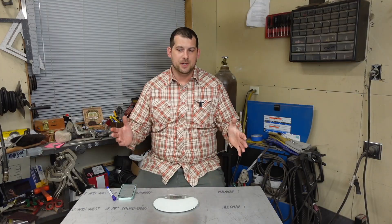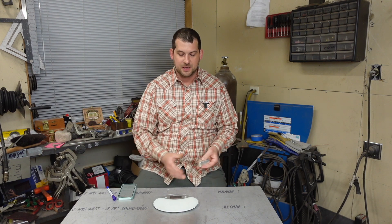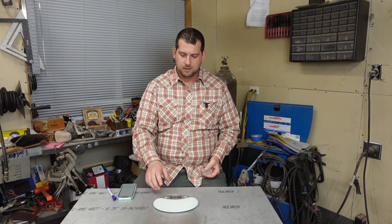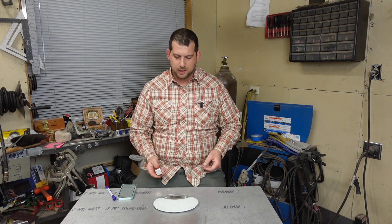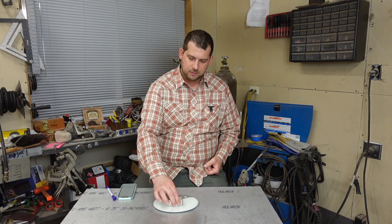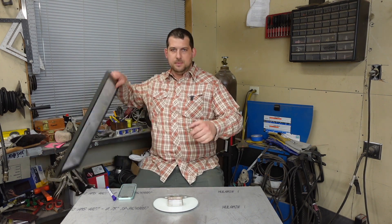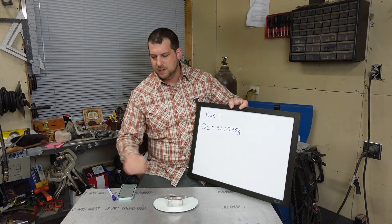So the first thing I'm going to do is just weigh the bar in grams. I'm just using a food scale here, and it comes out to 763 grams, so I'm going to write that down.